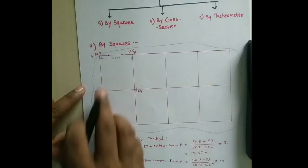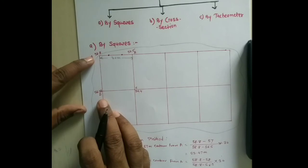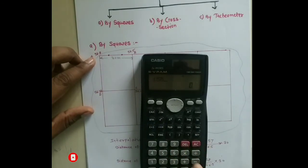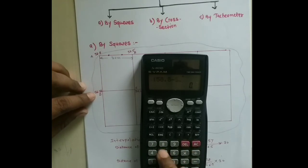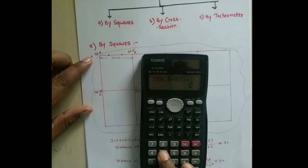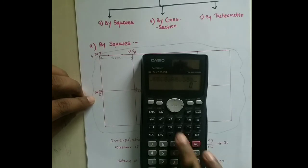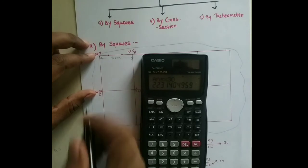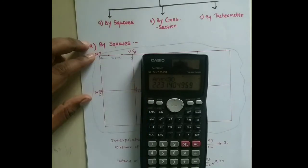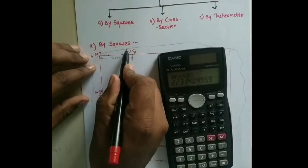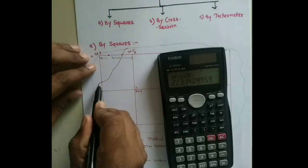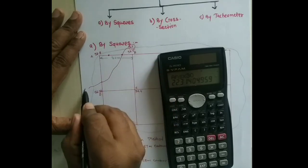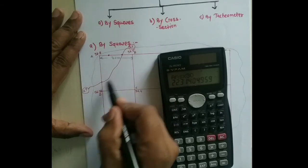Similarly, for the other pair of points with RLs 56.38 and 58.8, to find the 57-meter contour from A: (58.8 − 57) ÷ (58.8 − 56.38) × 30 = 22.31 meters. For the 58-meter contour from A on this side: (58.8 − 58) ÷ (58.8 − 56.38) × 30 = 9.91 meters. The two 57-meter points are then connected to form the 57-meter contour line, labeled as 57.